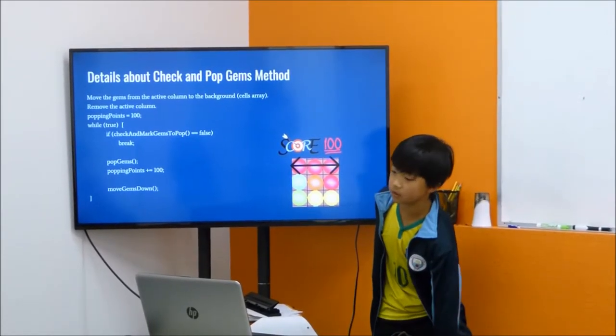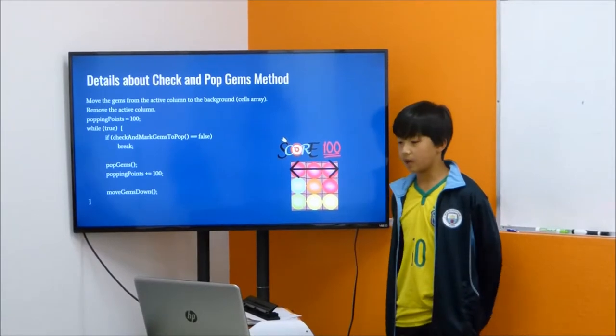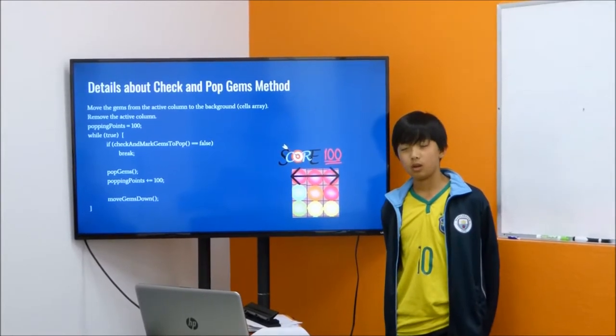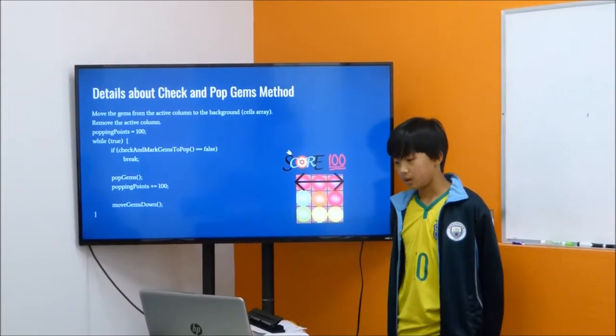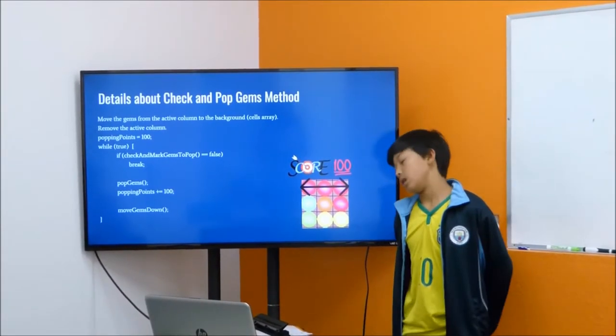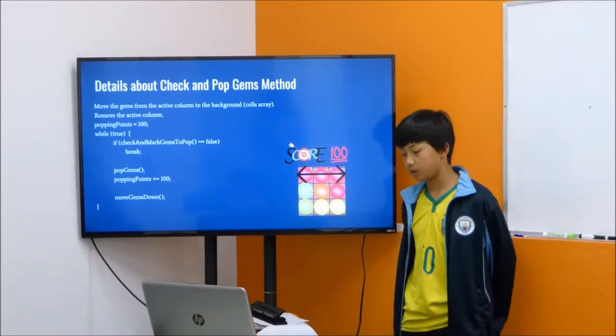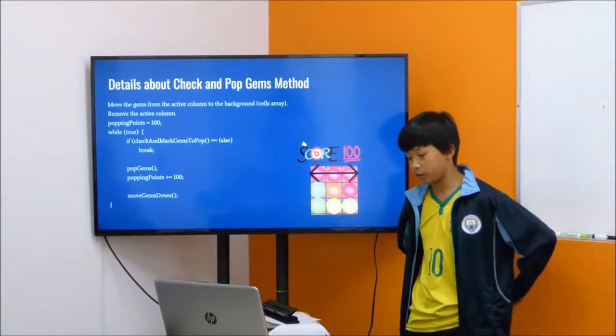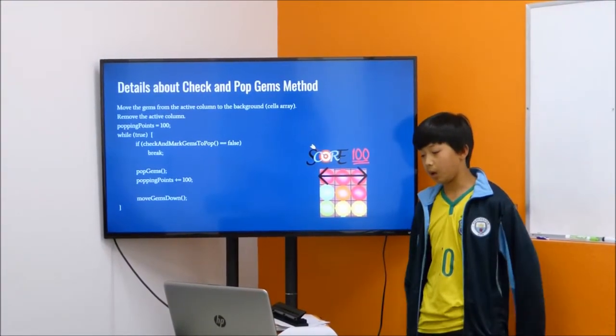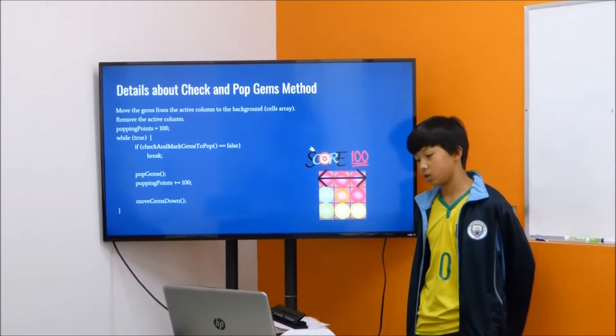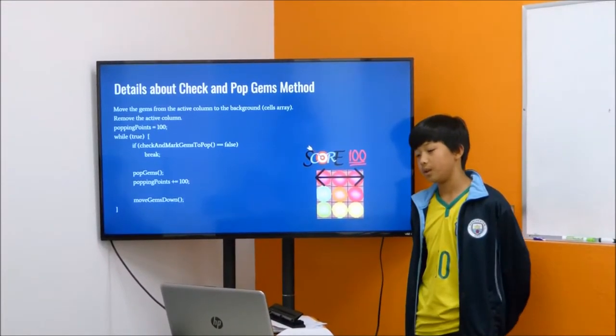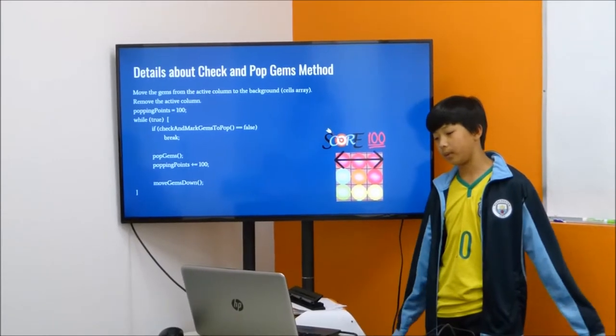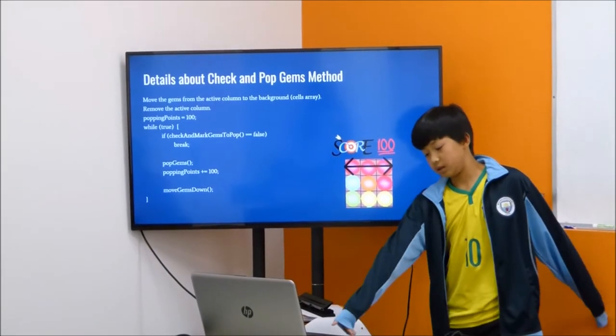Details about the check and pop gems method: move the gems from the active column to the background, then remove the active column since it's already in the background. Then this while loop checks if there are gems three in a row, and then it pops them and gives you 100 points for each gem that you pop. If there's another round of gems that can be popped, the popping points will be 200 for each gem, and so on and so forth.